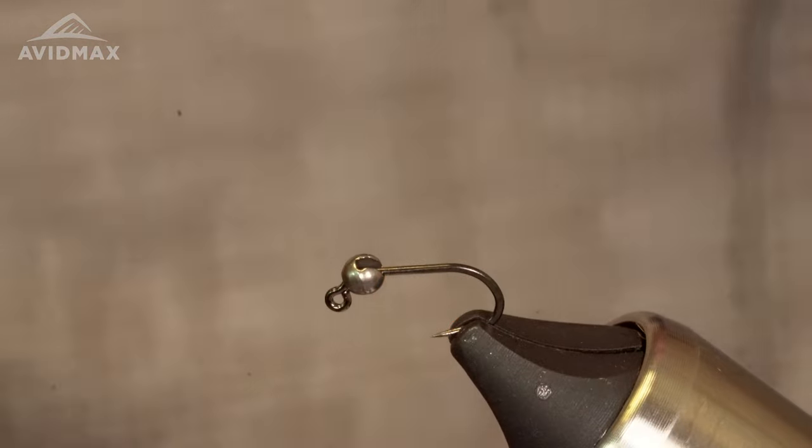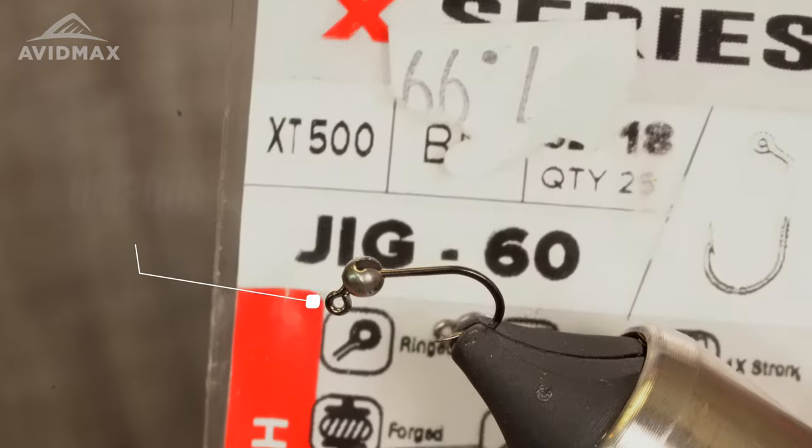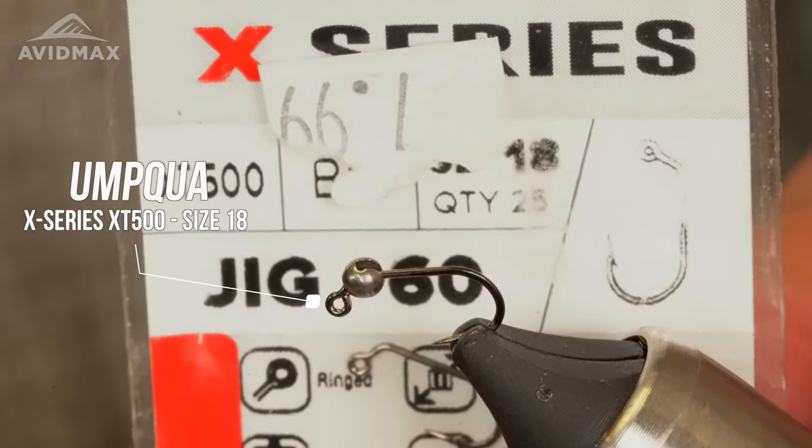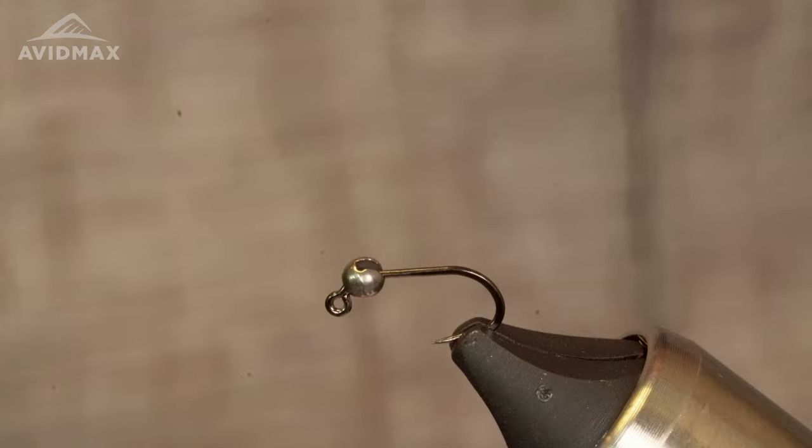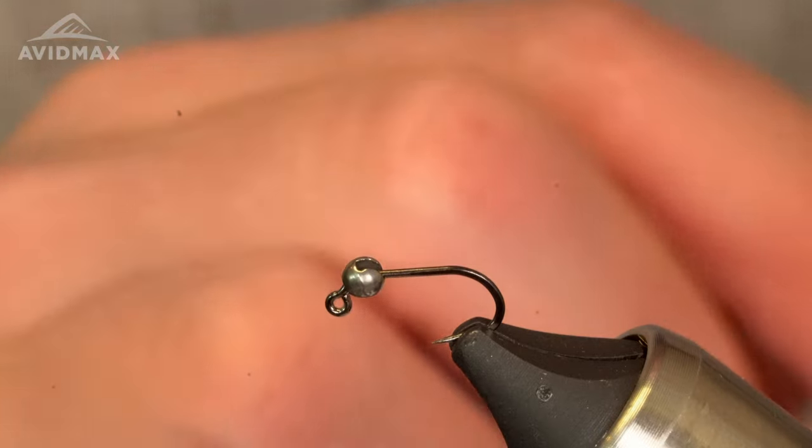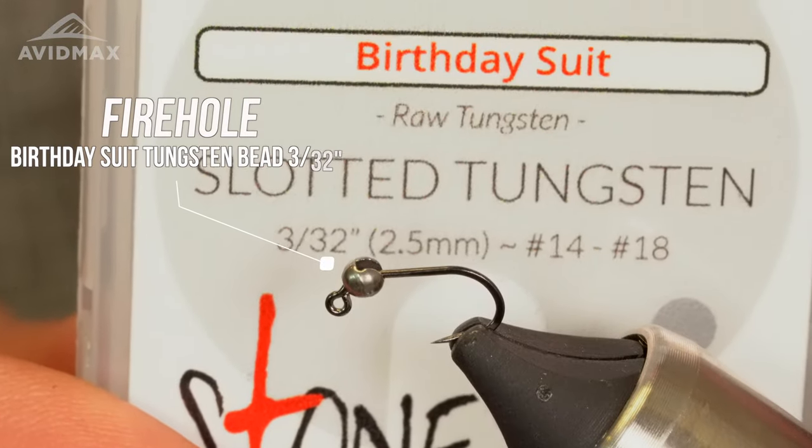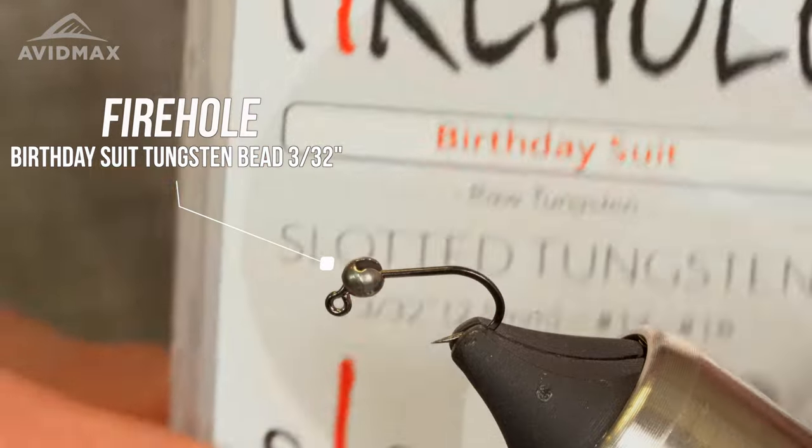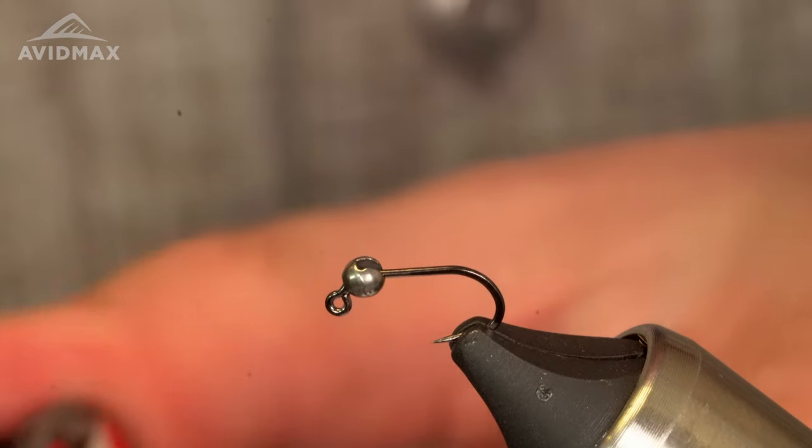Set my hook today, Umpqua XT500 size 18, just a jig 60, any jig you like, any jig that's your favorite, it'll make do. Bead, Fireholle birthday suit 2.5 millimeter, not quite silver and not quite black, just kind of gray, naked tungsten. Good stuff. I'm gonna tie it in black today.